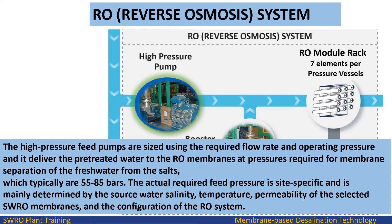The required pressures typically are 55 to 85 bars. The actual required feed pressure is site-specific and is mainly determined by the source water salinity, temperature, permeability of the selected SWRO membranes, and the configuration of the RO system.